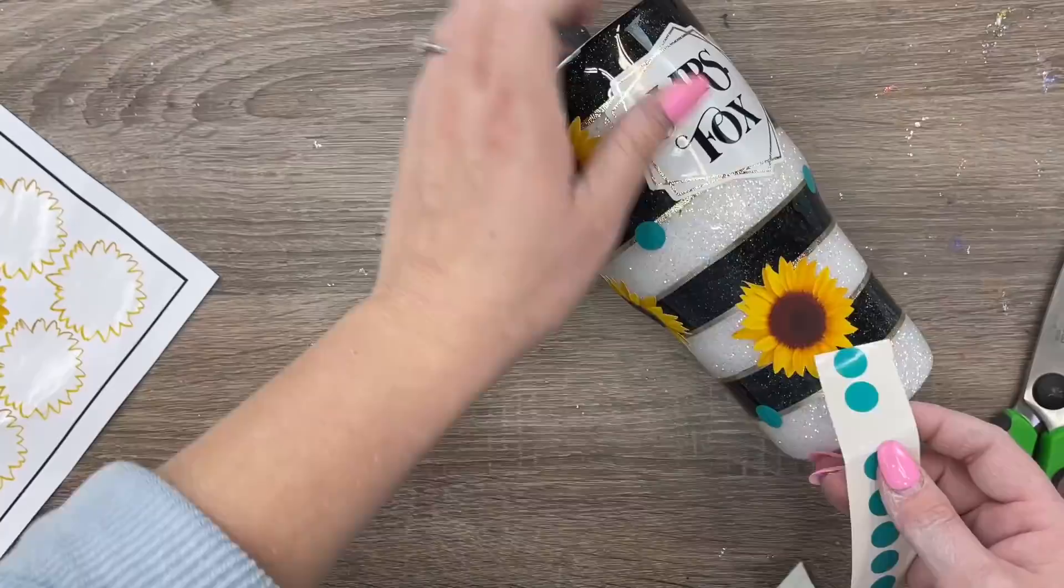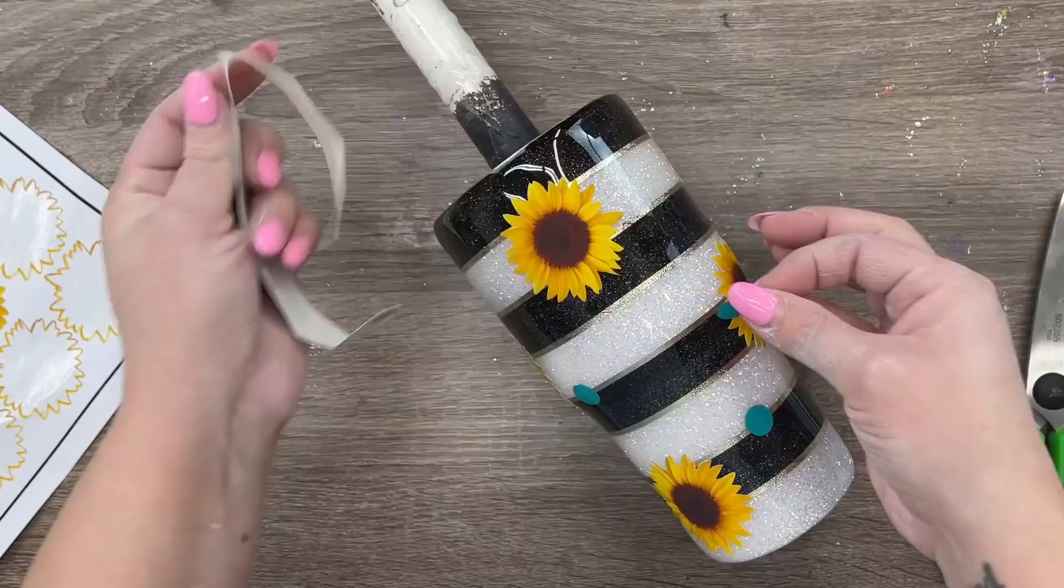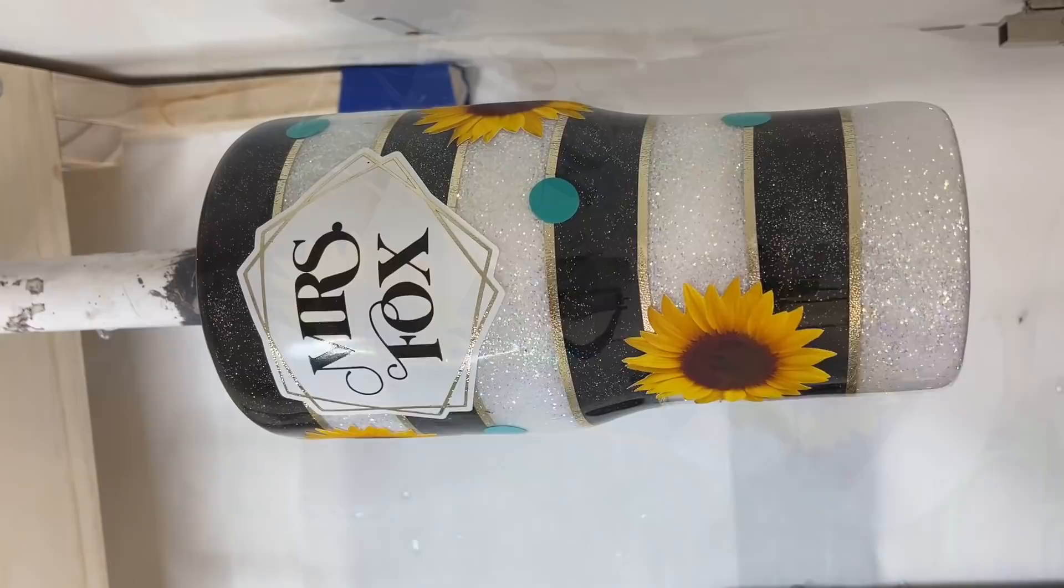After I got all my sunflowers placed, I just randomly placed these teal dots in line with some of those gold lines. I kind of alternated which side of the line I placed these on to kind of add a little bit more detail. So here's what we ended up with. I love it.